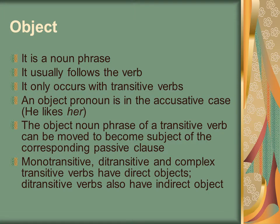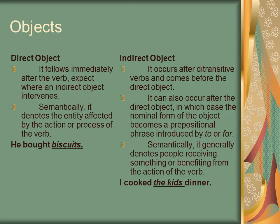After your verb, you may have an object — that's going to be a noun phrase, usually following the verb. It can only be with transitive verbs, and it can be an object pronoun. There are direct objects, as well as, for ditransitive verbs, indirect objects. The direct objects follow the verb immediately, and in terms of meaning it's showing what's being affected by that verb. Then there's the indirect object, which often will come after the ditransitive verb but before the direct object.